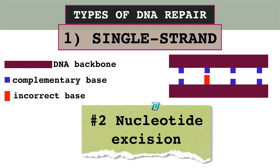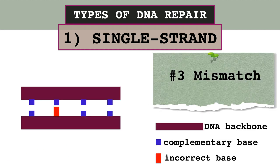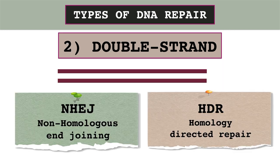The nucleotide excision is similar, with the difference being that the entire nucleotide gets removed and replaced with the correct one — so not only the nitrogenous base, but also one sugar and phosphate get removed and replaced. In the case of mismatch repair, after the incorrect base is recognized, a section of the DNA sequence is removed and replaced with the correct one.